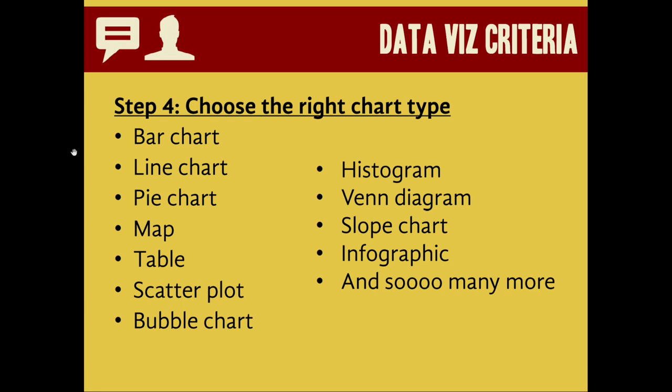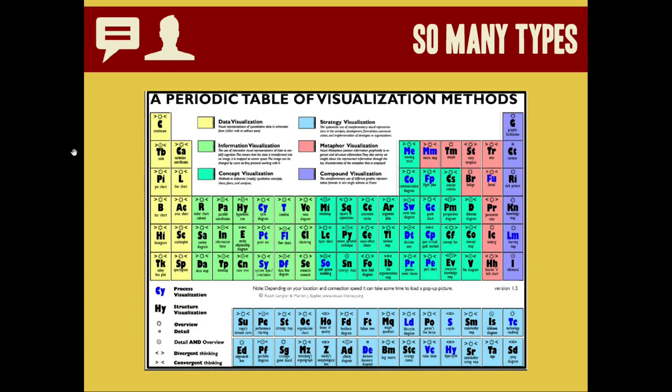I've listed a few different types of charts here. We're probably most familiar with bar chart, line charts, and pie charts, as well as perhaps more common visualizations like Venn diagrams or maps. But in actuality, there are dozens if not hundreds of different types of visualizations available to you.